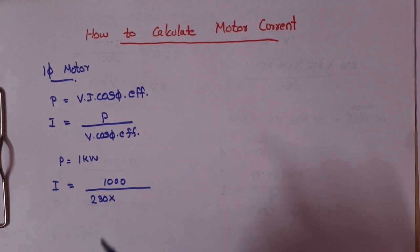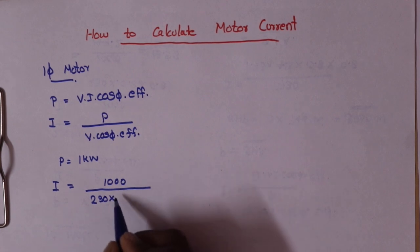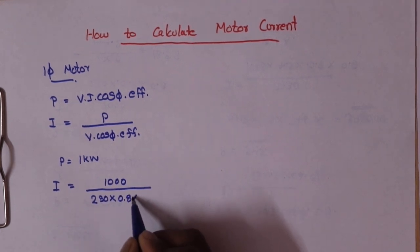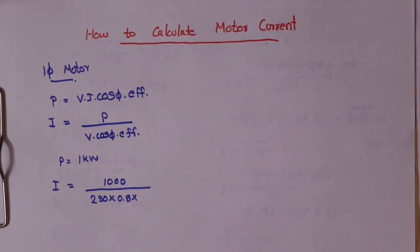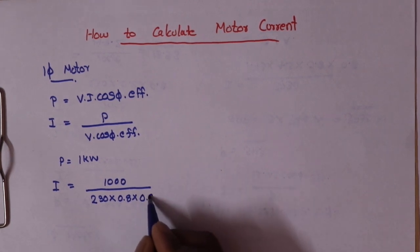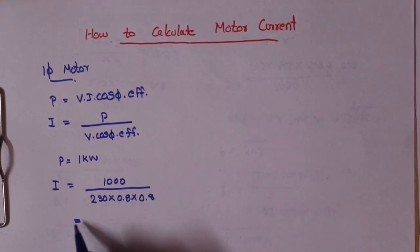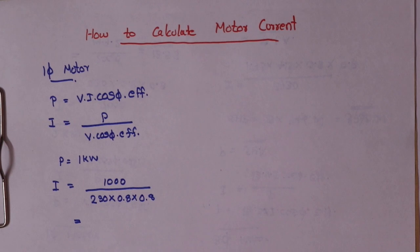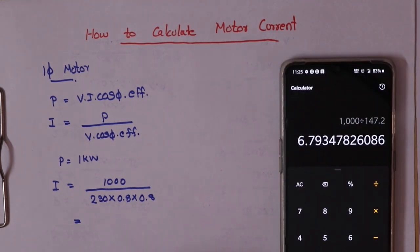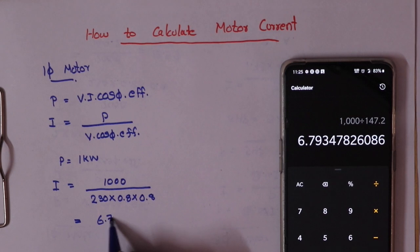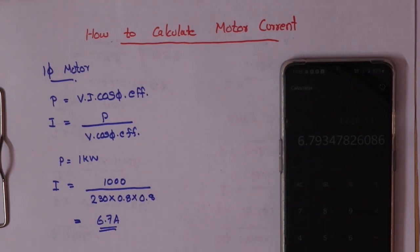The power factor of the motor is 0.8, and the efficiency of the motor is 0.80, that is 80%. This is the current calculation for a single-phase 1kW motor.